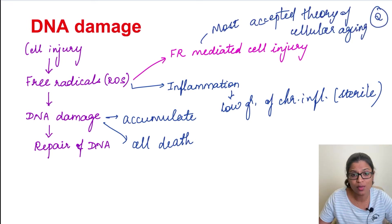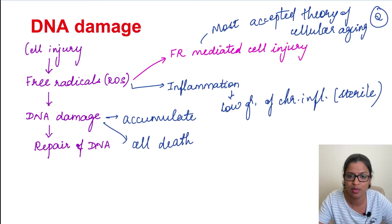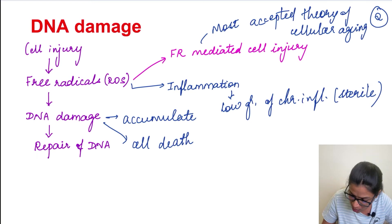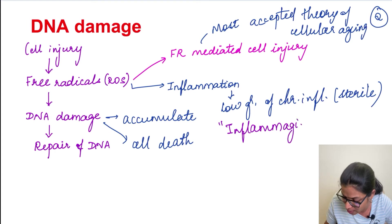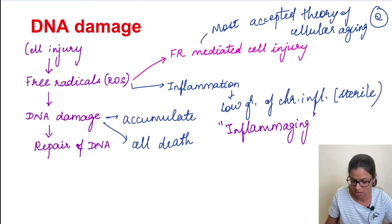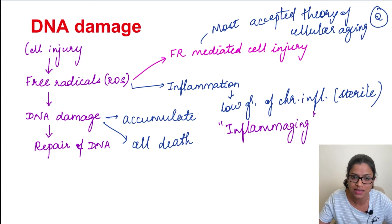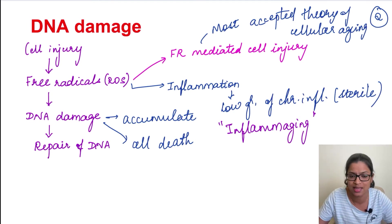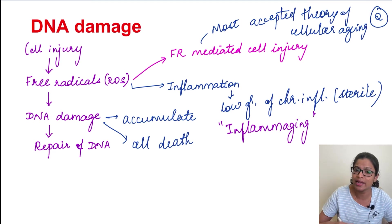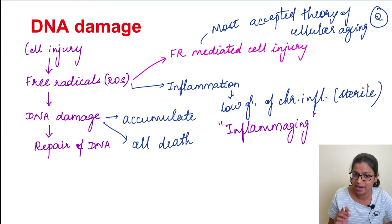This free radical-mediated cell injury is the most accepted theory of cellular aging. When I spoke about this inflammation, there is going to be a low grade inflammation always associated with aging — this is what is called inflammaging. As the name suggests, there is inflammation in aging. DNA damage is also the reason why elderly people are prone to get many diseases and cancers, because there is continuous DNA damage accumulated over the years. The importance of DNA repair we will understand in the next few slides.